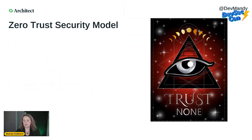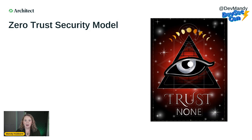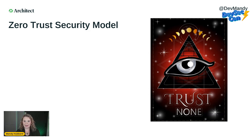A zero trust network is simply a network that operates according to the zero trust security model. The zero trust security model has been around for a long time — I initially saw 2005, but after digging further it was actually first established in the early 90s. It's really a hot topic today. In January of this year, the White House issued a memorandum specifying its own zero trust security architecture for any federal applications, requiring agencies to meet certain cybersecurity standards by the end of fiscal year 2024.